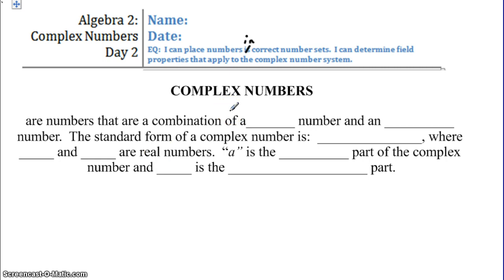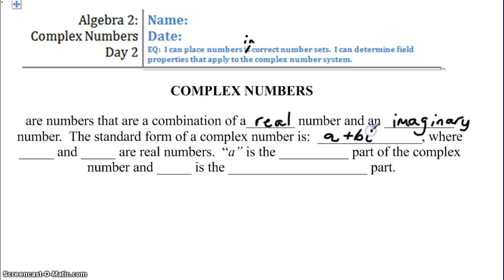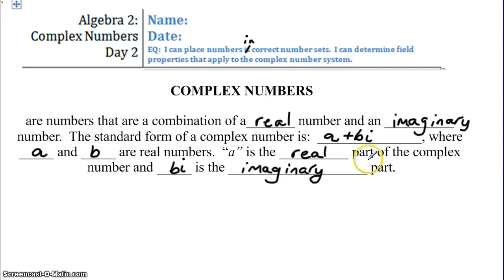The first part is a review from class on complex numbers. Remember that complex numbers are a combination of a real number and an imaginary number. The standard form of a complex number is A plus Bi, where A and B are real numbers. A is the real part and Bi is the imaginary part.